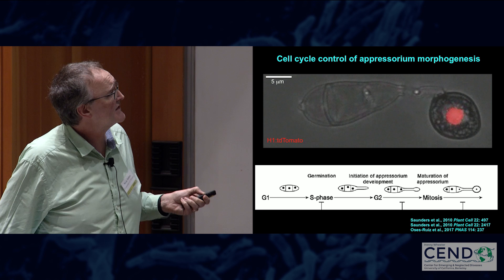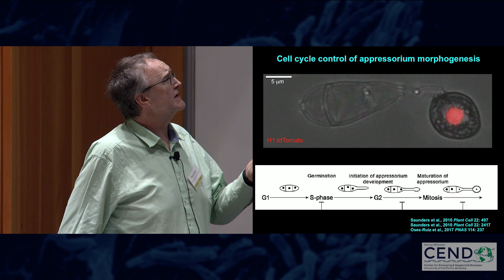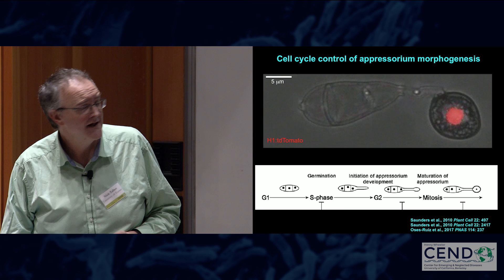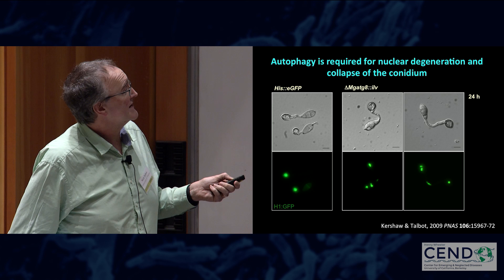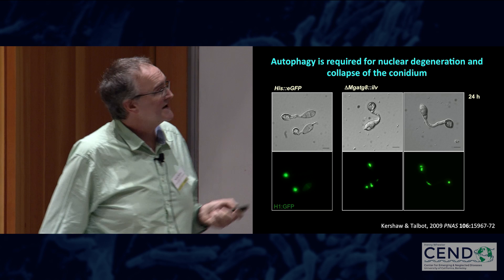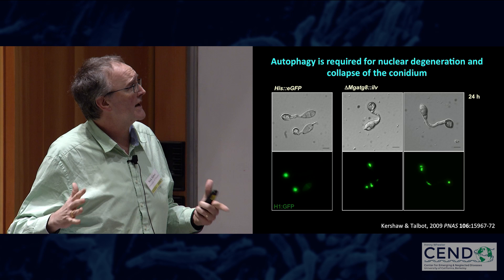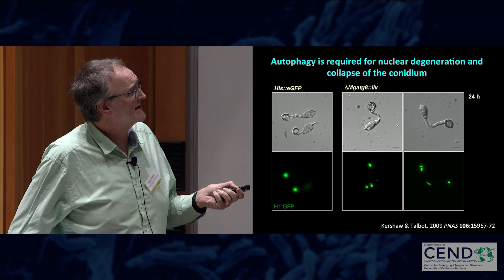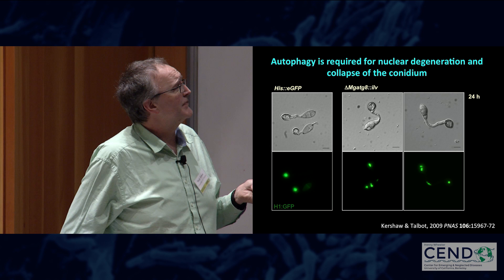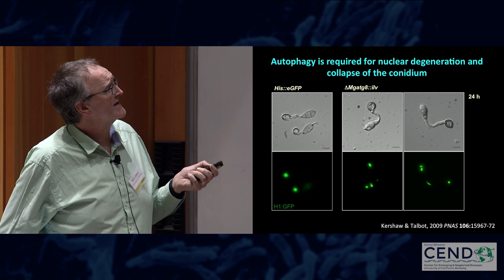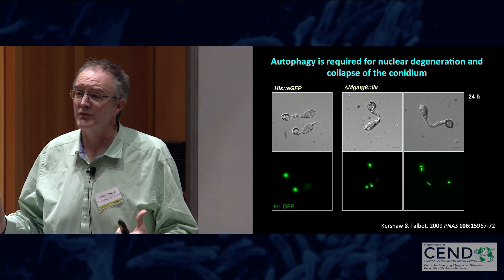The third prerequisite is that those three nuclei have to be degraded in order for the appressorium cell to be mature and competent to infect rice, and that process involves autophagy. In a wild-type cell you see a single nucleus in each appressorium, but in a mutant where we deleted ATG8 — a component of the macroautophagy pathway — the nuclei are no longer degraded, they're distended and abnormal. Under those conditions the appressorium forms but is unable to mature properly or repolarize. Recycling of spore contents, including breakdown of the nuclei, is a prerequisite for functional competence.